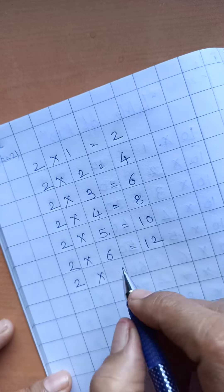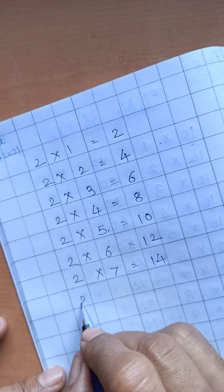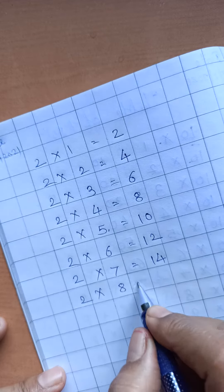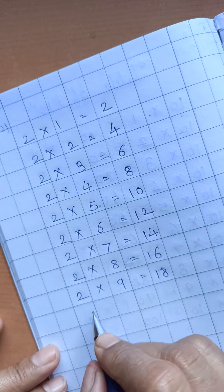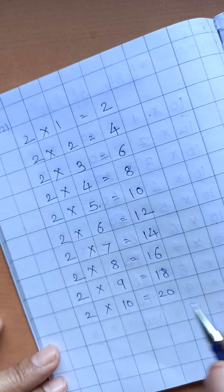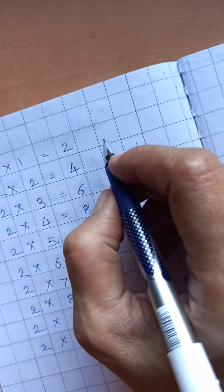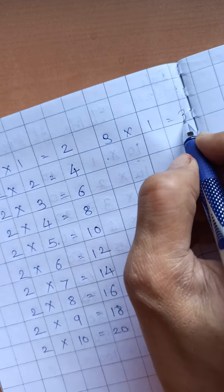2 7s are 14. 2 8s are 16. 2 9s are 18. And 2 10s are 20. Here 3 1s are 3.